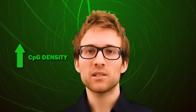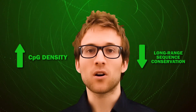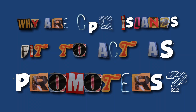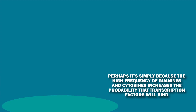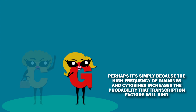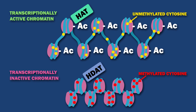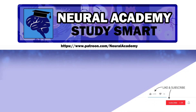Interestingly, apart from their elevated CpG density, CpG islands do not have much long-range sequence conservation. Sometimes they even lack core promoter elements, such as the TATA box, which specifies where transcription begins. So why are CpG islands fit to act as promoters? Perhaps it's simply because the high frequency of guanines and cytosines increases the probability that transcription factors will bind. Non-methylated CpG islands show a characteristic organization of chromatin structure that predisposes them to promoter activity, and chromatin with CpG islands has high levels of acetylation of the H3 and H4 histones, while H1 is depleted, which is characteristic of transcriptionally active chromatin.